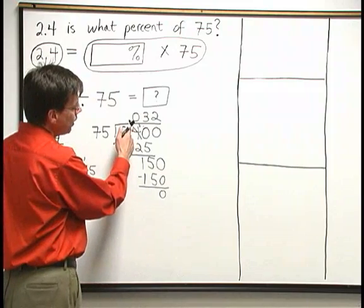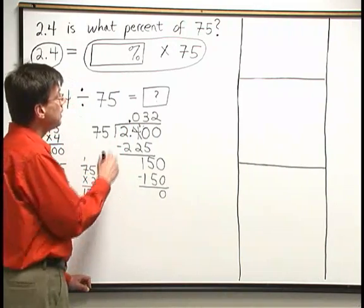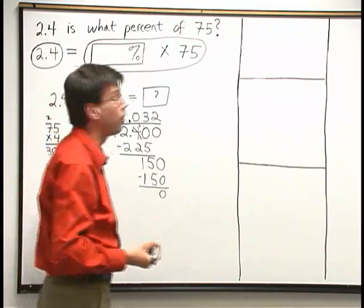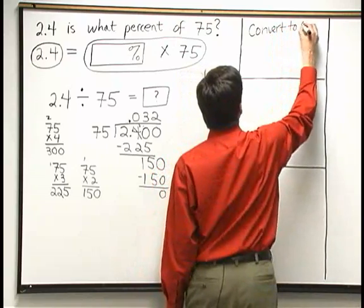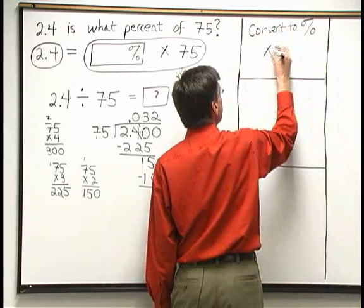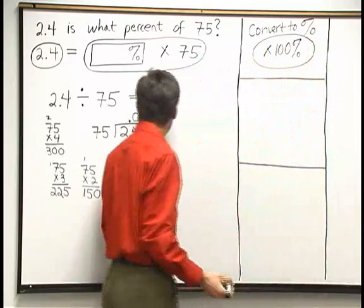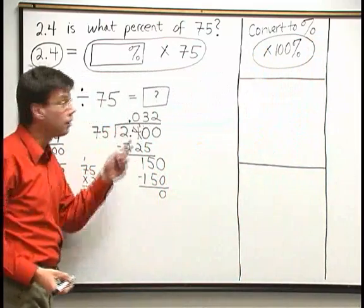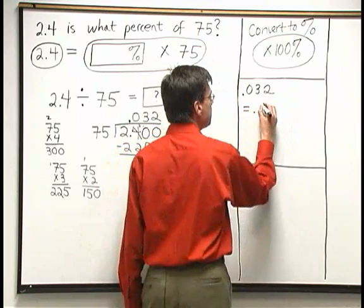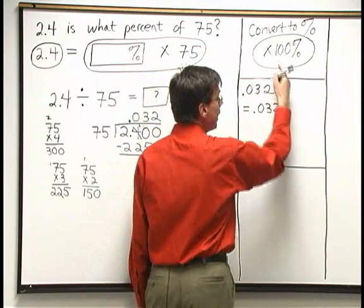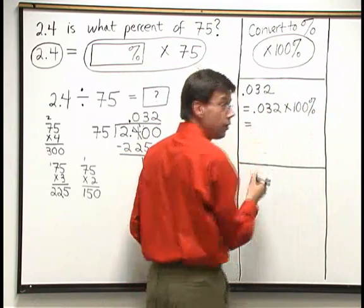The result of the division here is 0.032. Now, we're not quite done yet because we need to convert our answer to a percent form. And to convert to a percent form, what we do is we multiply by 100 and add a percent sign on the end. So I'm going to take the result of our division, 0.032. I'll do that here on the right.